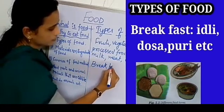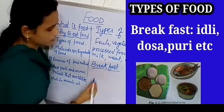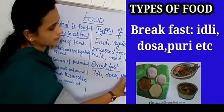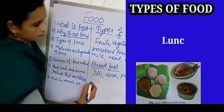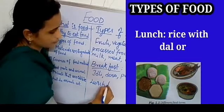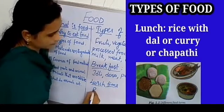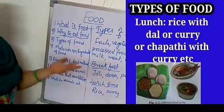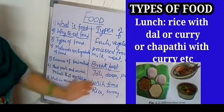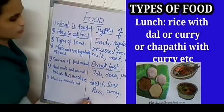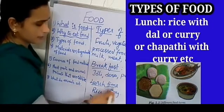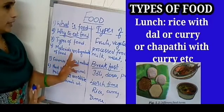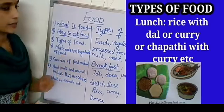During breakfast we generally eat idli, dosa, or puri. During lunch we eat rice with some curry. For dinner also, some people eat rice with curry. So we shall see in detail what are the materials or the ingredients required to make this food.